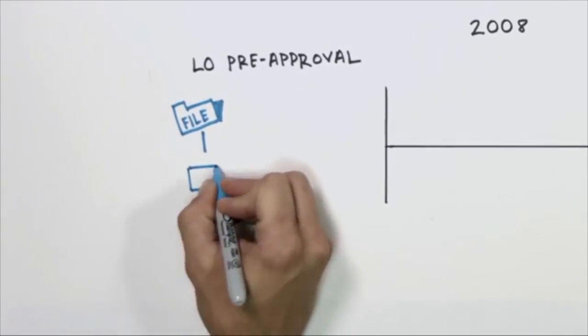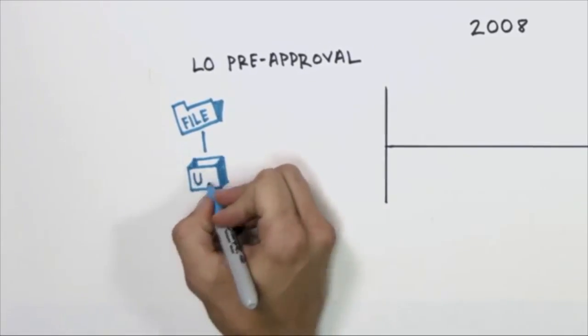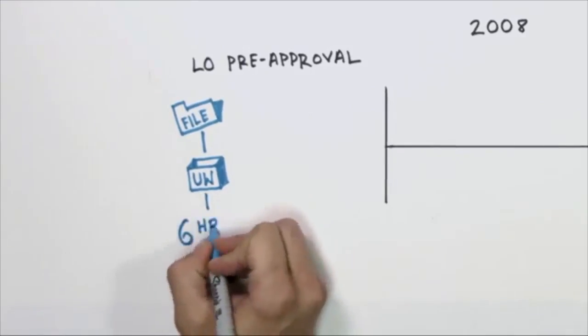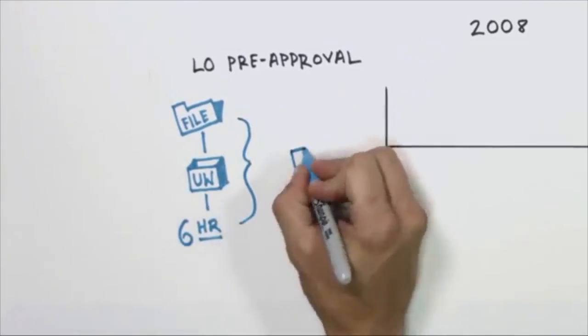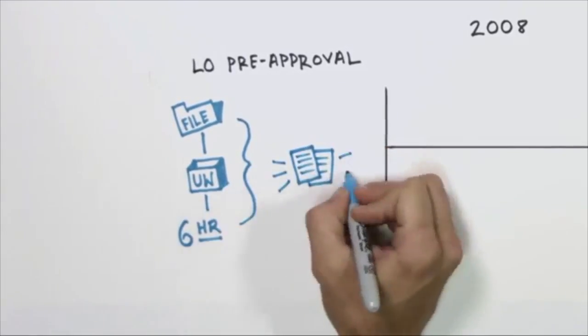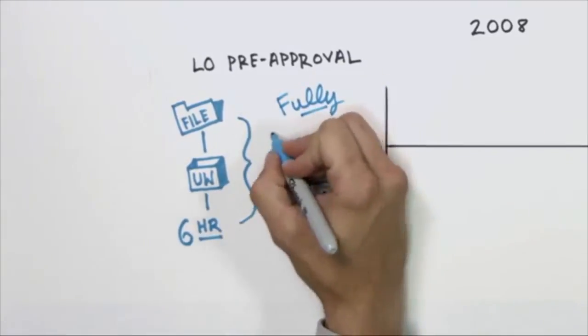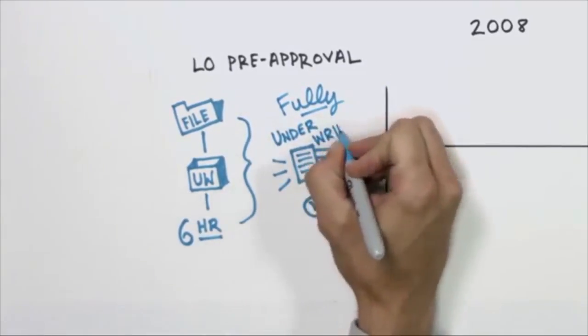In our system, we want to send the file directly to underwriting today. And what that means with Movement Mortgage's process is we will get the underwriting back, usually in six hours or less. And before the realtor even potentially meets with the client to start talking about neighborhoods or driving them around to look at houses, we're going to have a fully underwritten loan.